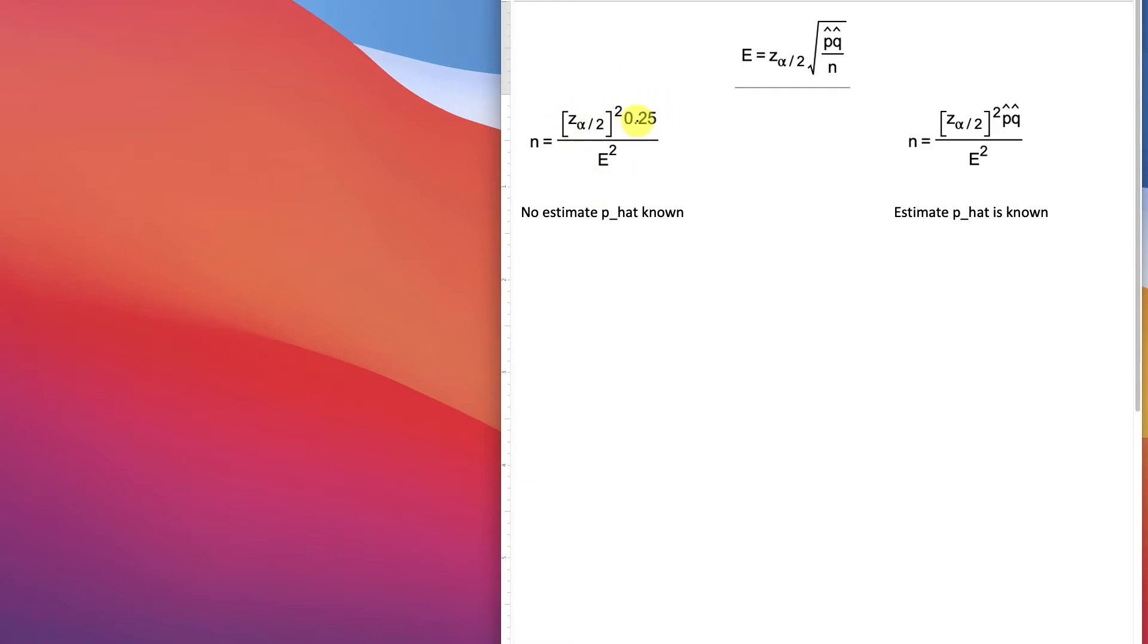Now, how does the 0.25 come to be? Well, that's for taking an estimate of 0.5 and 0.5 for q-hat and p-hat. And you multiply those together, 0.25.